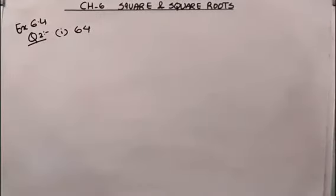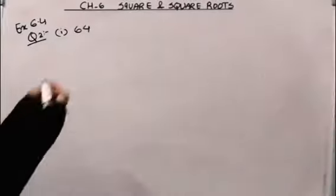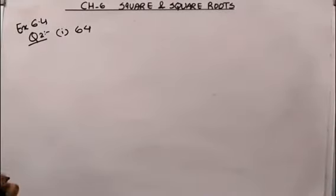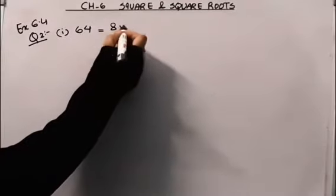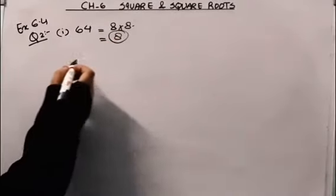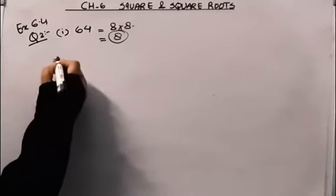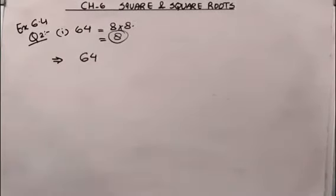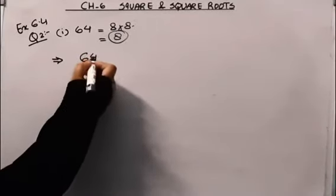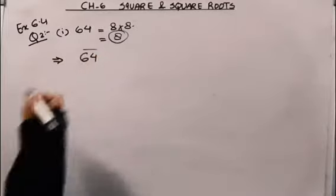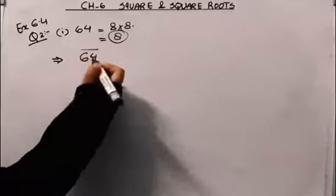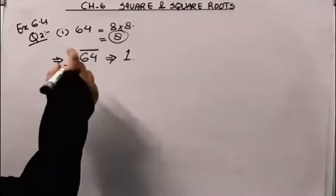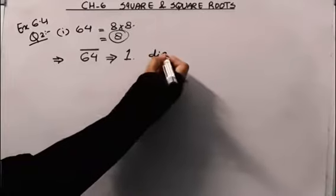The first number is 64. To find the number of digits in its square root without doing the actual calculation, we use the bar method. Starting from the last digit (unit place), we move towards the left, pairing digits. 64 has one bar, which means its square root will have one digit.